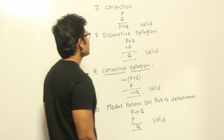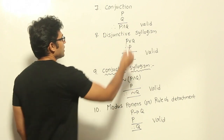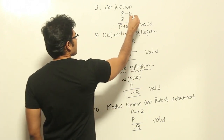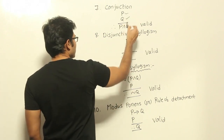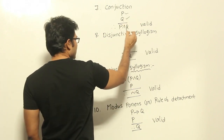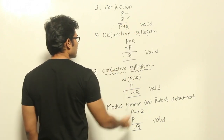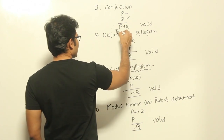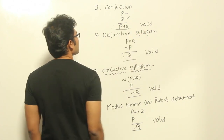Now let's see the conjunction rule. If P and Q are both true, then definitely P∧Q will be true. Therefore it is a valid argument.